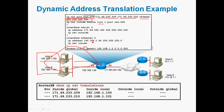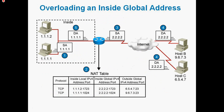Then we apply the dynamic NAT statement: IP NAT inside source list 1 pool net-208. The access list number 1 and pool name net-208 match those defined earlier. After creating this configuration, verify in router privilege mode using 'show IP NAT translation'. The inside local addresses 192.168.1.100 and 192.168.1.101 are automatically translated into public addresses 209 and 210, which belong to the defined pool.